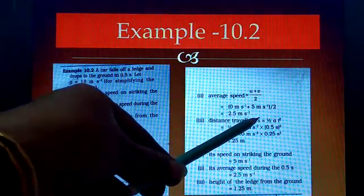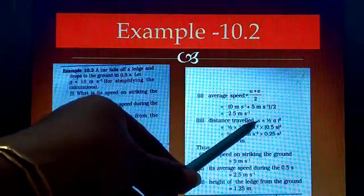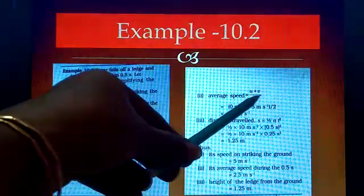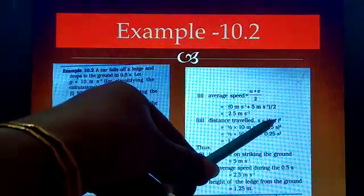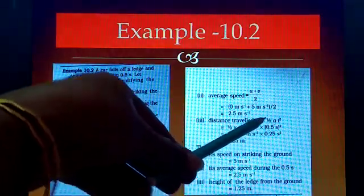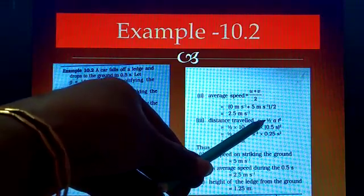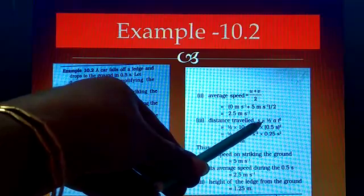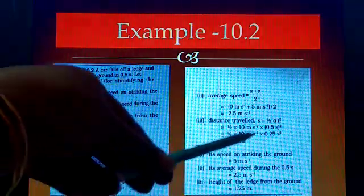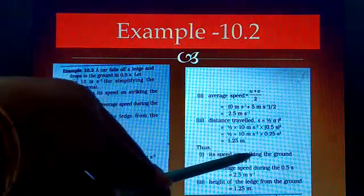Then distance traveled by the object. There also, S = UT + ½AT². That formula we can use. Here A means g. The UT term will be 0 because U = 0. Then substitute all the values, we will get 1.25 meters.